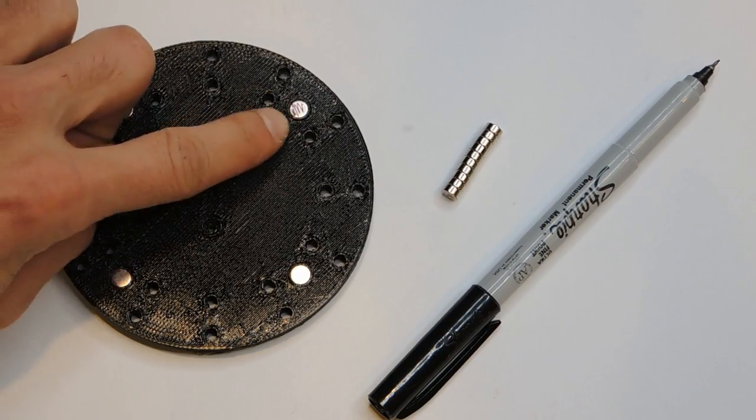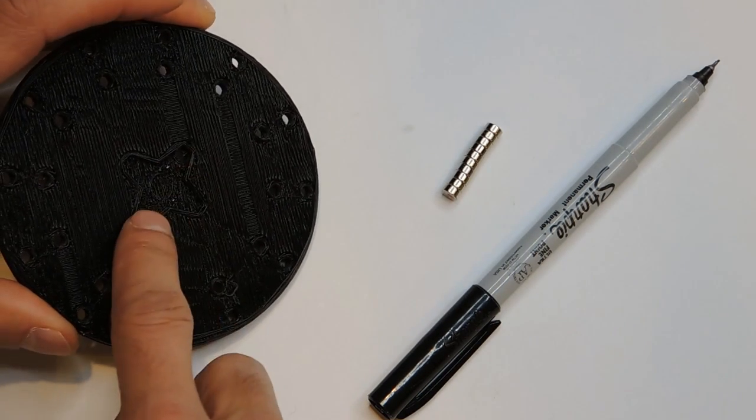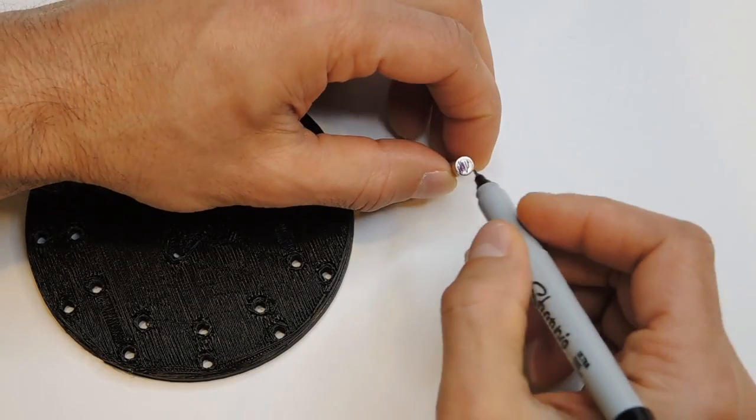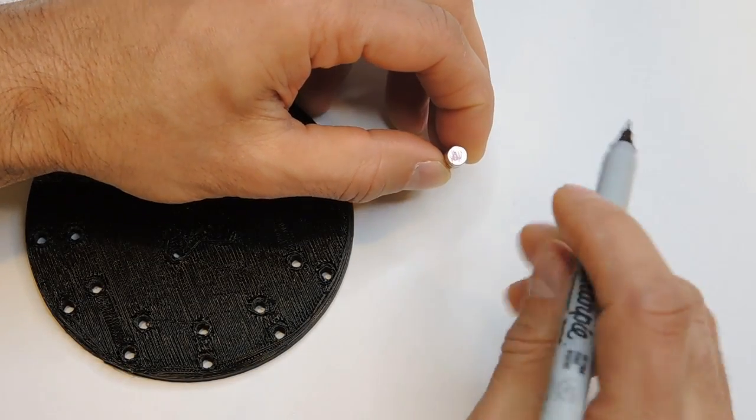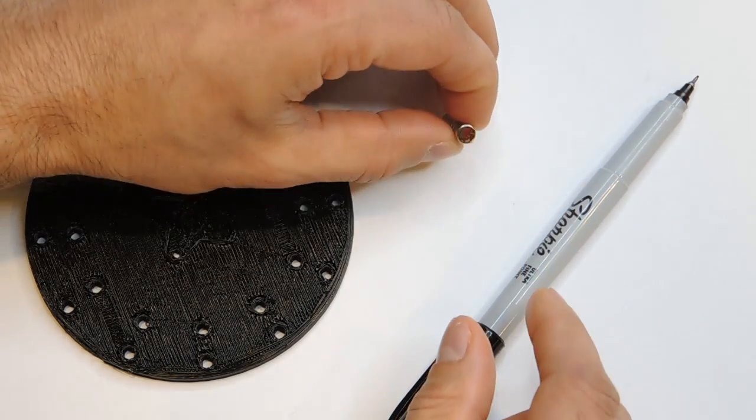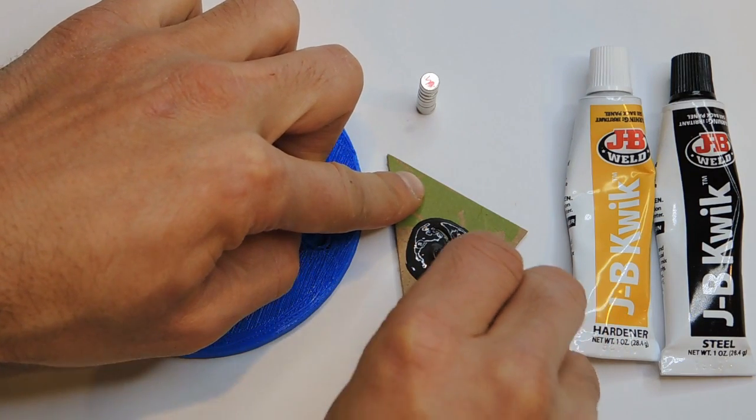First install four magnets onto the master plate that mounts onto the servo horn of the motor. Be sure to mark the polarity of the magnets so that you can get the orientation correct when you install the magnets on the various attachment plates. I use a little bit of two part epoxy in the bottom of each hole to retain the magnets.